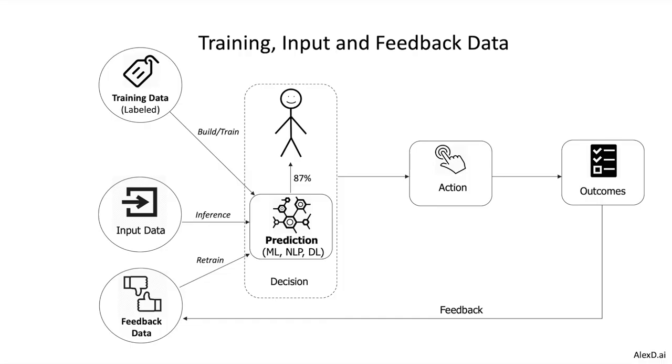When we are dealing with AI, we have training data to build the first model. Then we have input data to infer and make predictions, and we get some feedback. We then use the feedback data plus the input data to retrain and rebuild, keeping the model updated to the real situations coming from actual use.